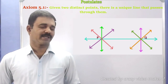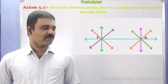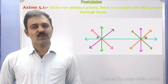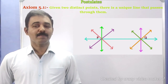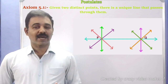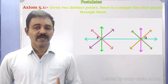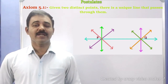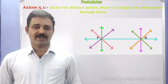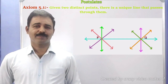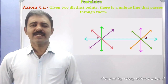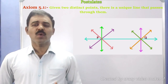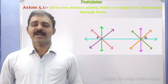Points P and Q are common to one straight line — that is the PQ straight line. One straight line passes through the two points.